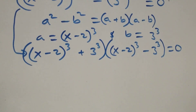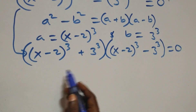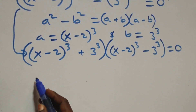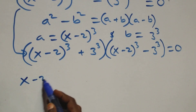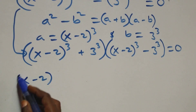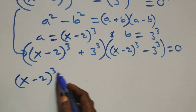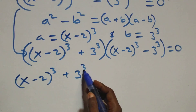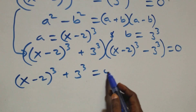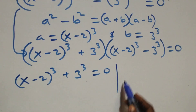Then here we have two possible cases. The first one: x minus 2 all raised to power 3 plus 3 raised to power 3 equals 0.